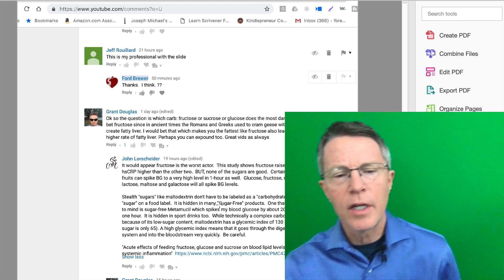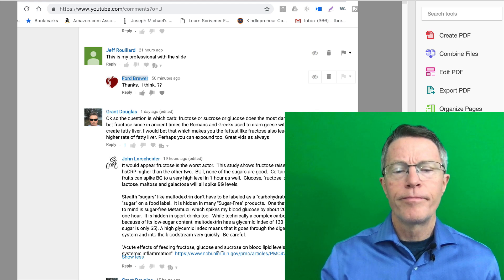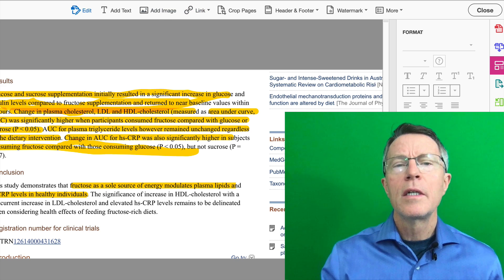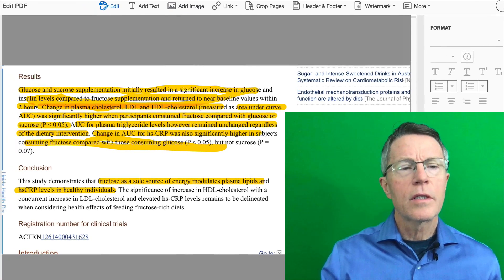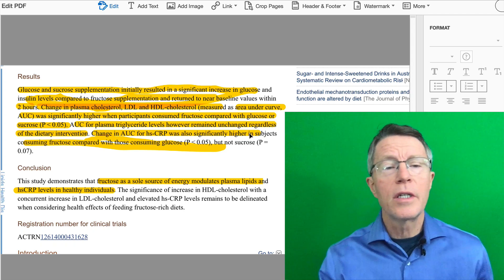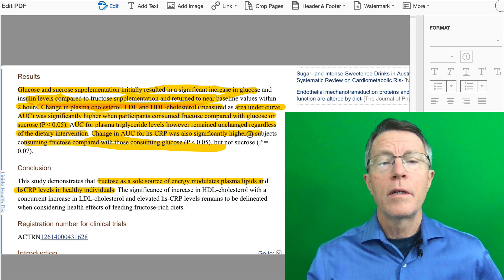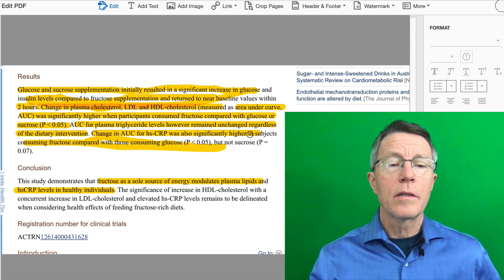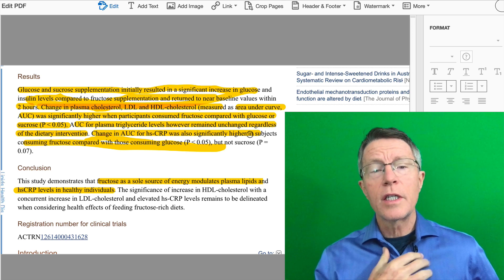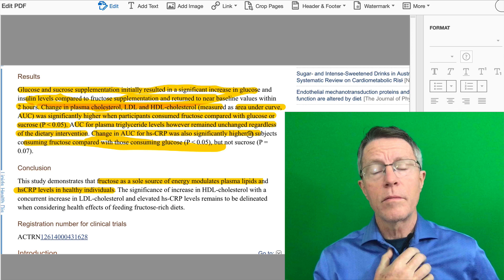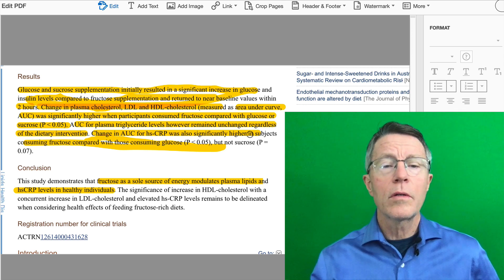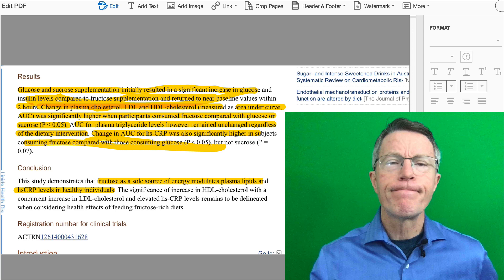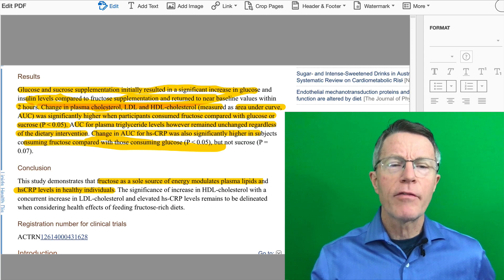So I looked up John's study he cited and here's what I saw, at least coming out of the blocks, some interesting results. Glucose and sucrose supplementation initially resulted in significant increase in blood glucose and insulin levels as well compared to fructose. In other words, fructose didn't really increase the blood glucose or insulin. Now does that mean that maybe fructose is not that bad after all?